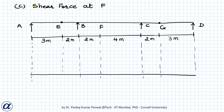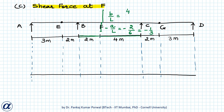Next, we want to draw the influence line diagram for shear force at F. To do that we cut a section at F and displace the two ends in the positive sense of shear force. The left segment goes down by A/L, where A is 2 meters and L is the length of segment BC = 6 meters, giving −1/3. The right segment goes up by B/L, where B is 4 meters and L is 6 meters, giving +2/3 units.